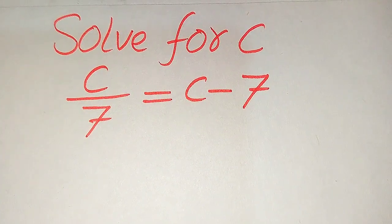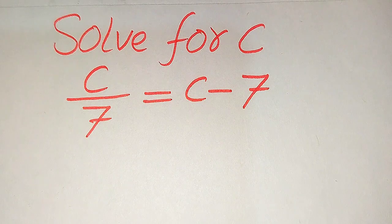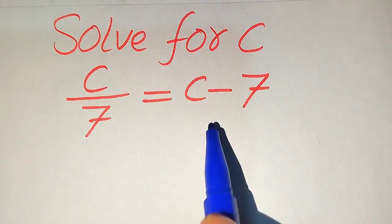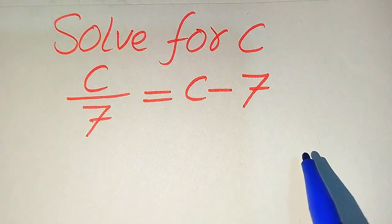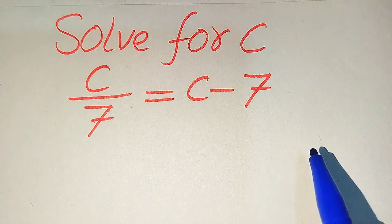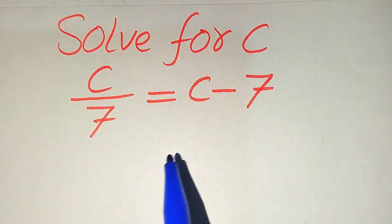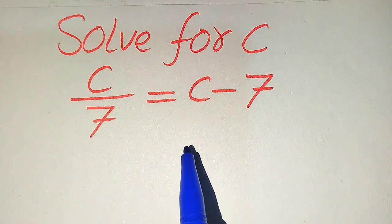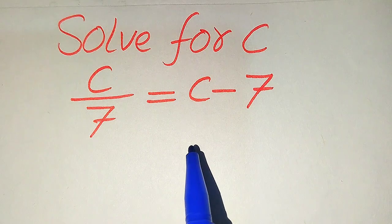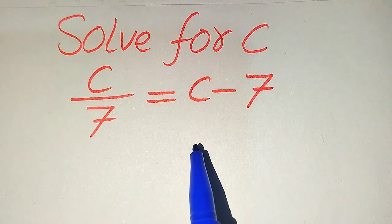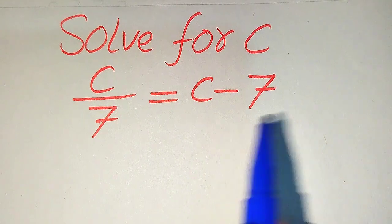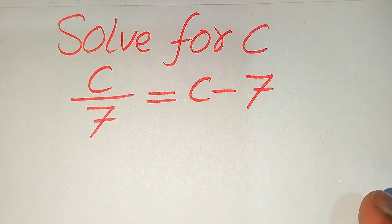Hello everyone. How to solve this problem for the values of C: if we have C divided by 7 equals C minus 7, and we solve this for all values of C. First we find all the roots of this equation, and at the end we will verify which of the roots are solutions and which are extraneous roots.